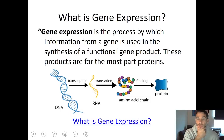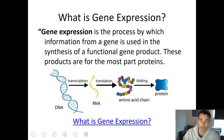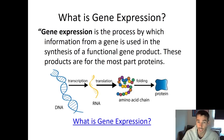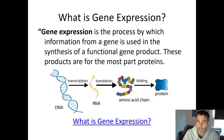When genes are expressed, they're used to make the product. There's a diagram here: you have DNA, it's transcribed to make RNA, and that RNA is then translated to make an amino acid chain, which folds up into a functional protein. Each protein has a different function.